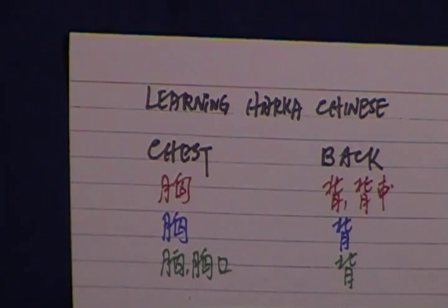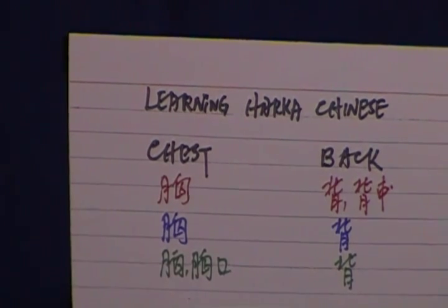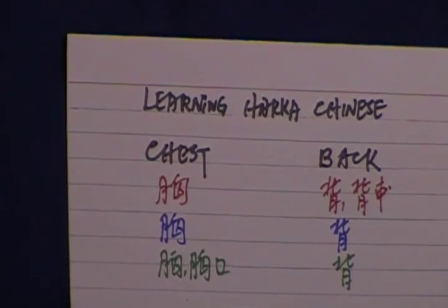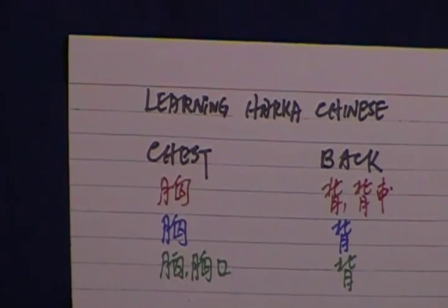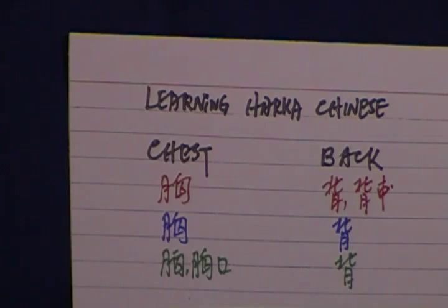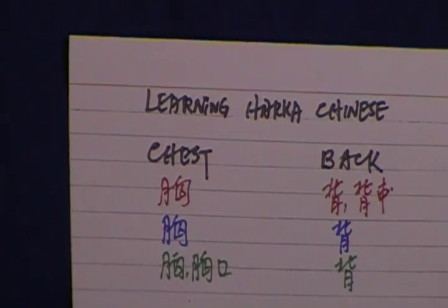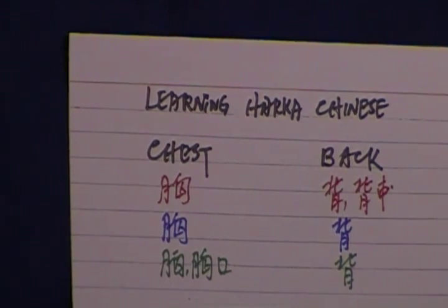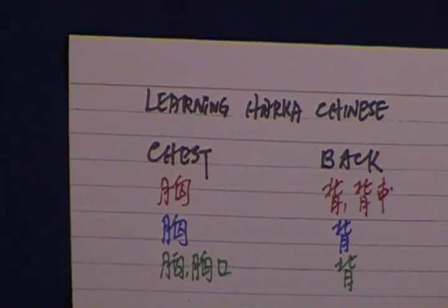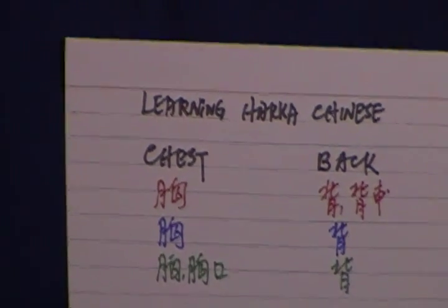Back. Back in Hakka Chinese is puei or puei long. Puei or puei long. In Mandarin it's pei. And in Shanghai dialect is pei. I repeat it again. Puei or puei long in Hakka Chinese. Pei in Mandarin. Pei in Shanghai dialect. Thank you.